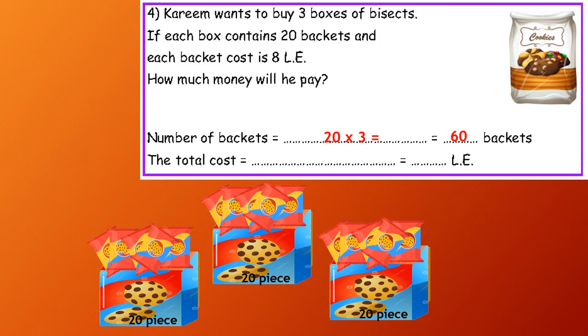The total cost: each packet, the price of each packet is £8. So 60 by 8, because I have 60 packets, equals £480.